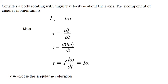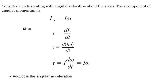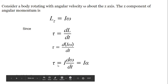We can substitute to get T_0 equals d(I omega) by dt. Since the moment of inertia I is constant for a particular shape, this gives T_0 equals I times d(omega)/dt. The rate of change of angular velocity is angular acceleration alpha. Therefore, T_0 equals I times alpha — that is, torque equals I alpha.